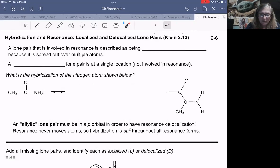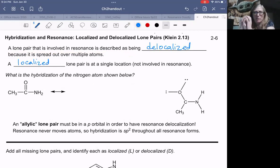When we have a lone pair that is involved in resonance, we say that such a lone pair is delocalized. We describe it as being delocalized because it's spread out over multiple atoms. On the other hand, a localized lone pair is at a single location. In other words, you're not involved in resonance.